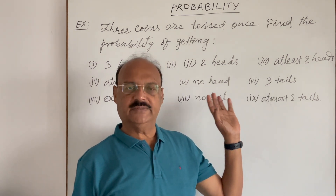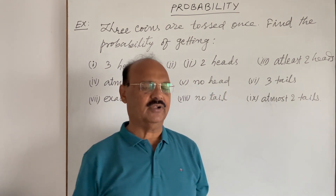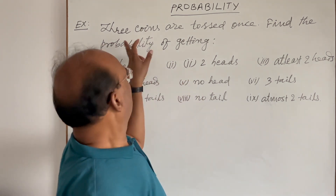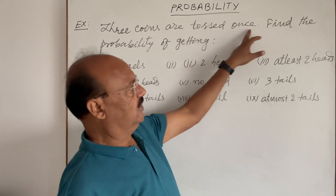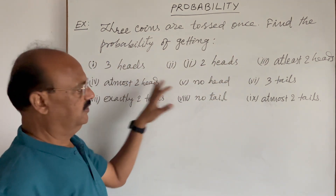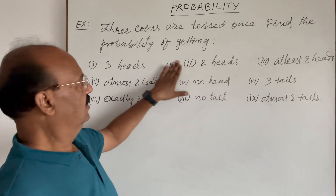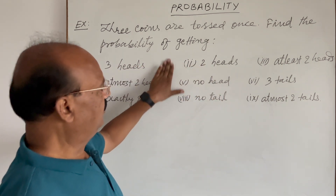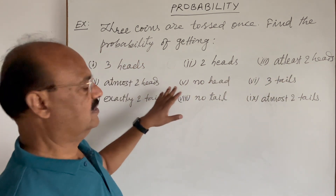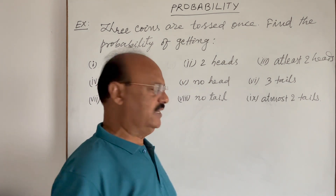Welcome students. This question has been taken from NCERT of Class 11, from the topic of probabilities. The question is: three coins are tossed once, find the probability of getting — there are nine parts to this question: three heads, two heads, at least two heads, at most two heads, and so on. We'll do them one by one. This is not difficult; it is very simple.